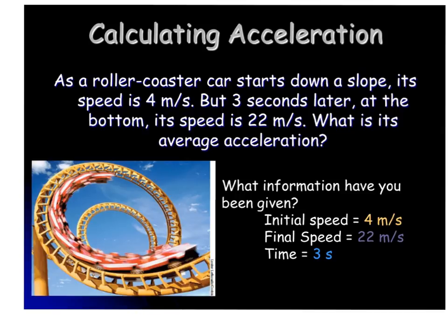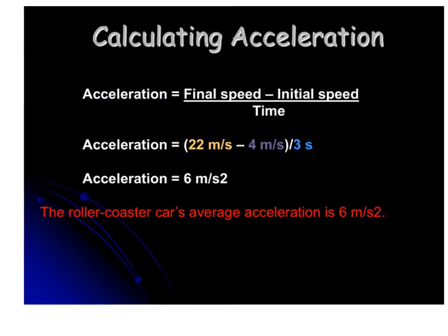In this example, as a roller coaster car starts down a slope, its speed is 4 meters per second, but 3 seconds later at the bottom, its speed is 22 meters per second. So what is its average acceleration? We know that our initial speed is 4 meters per second, our final speed is 22 meters per second, and our time is 3 seconds. When we plug it into this equation, acceleration equals final speed minus initial speed divided by time, we're going to say 22 meters per second minus 4 meters per second, all divided by 3 seconds. So the acceleration is 6 meters per second squared. The roller coaster's average acceleration is 6 meters per second squared down. You need to make sure you get that direction in there to have an acceleration, because it is a vector quantity.